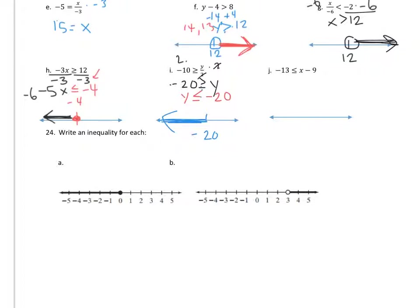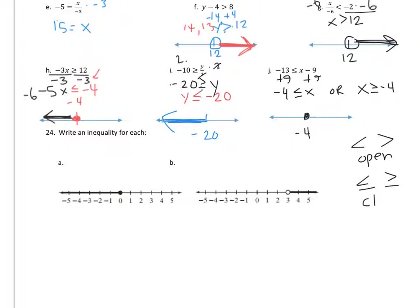J: I want to add 9 to each side. Negative 13 plus 9 is negative 4, less than or equal to x. Or, with the variable on the left-hand side: x is greater than or equal to negative 4. Put a closed dot at negative 4. Remember — less than or greater than is an open dot; less than or equal to, or greater than or equal to, is a closed dot. All numbers greater than negative 4, like 0, negative 3, and 5, go in that direction.